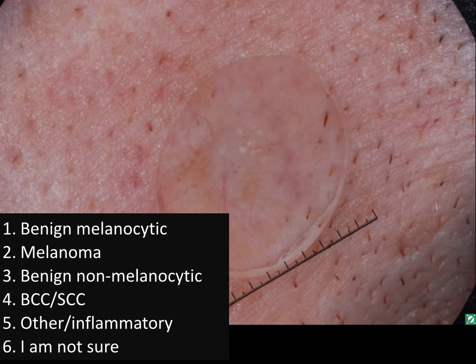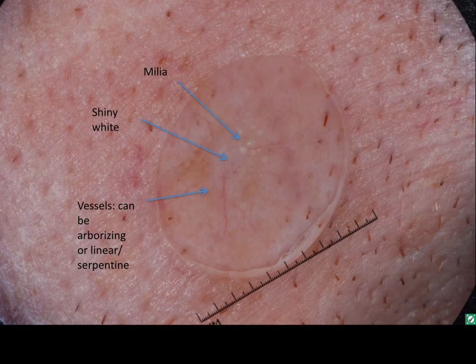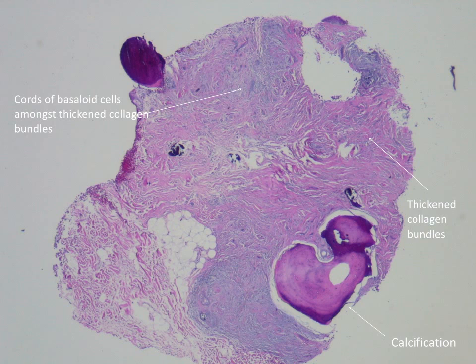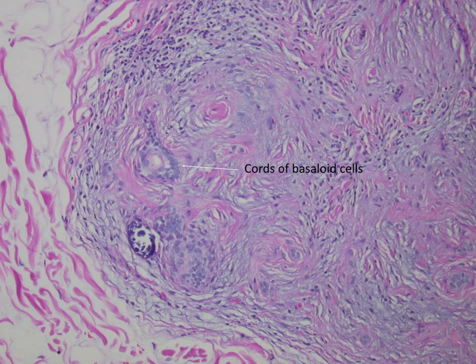Give it a thought as to what this may be. What are the structures one sees? The lesion has a shiny white background with multiple milia cysts and a few irregular linear vessels. On biopsy, this lesion revealed cords of basaloid cells, some calcifications, and thickened collagen.